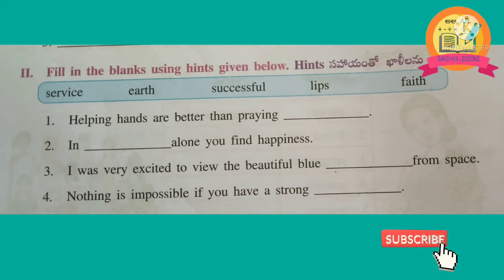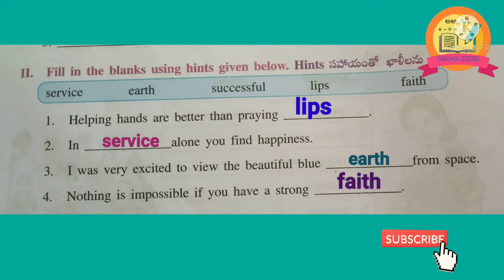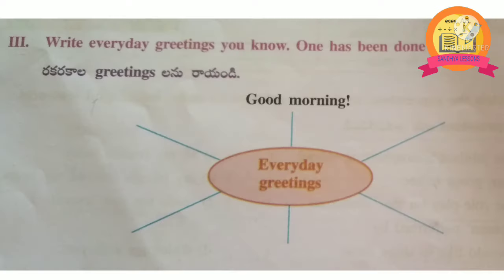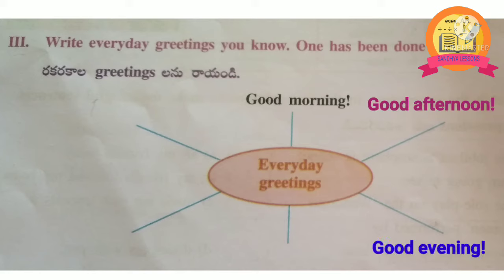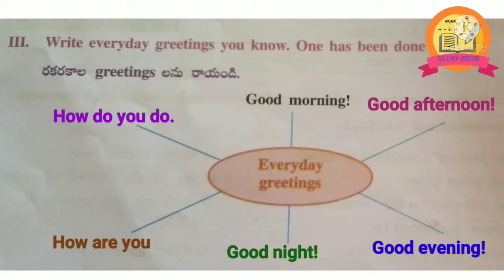2nd Roman: fill in the blanks using the hints given below. 3rd Roman: write everyday greetings you know. One has been done for you. Good morning, good afternoon, good evening, good night, how are you, how do you do?